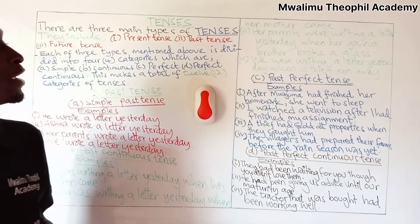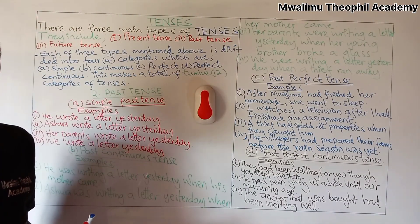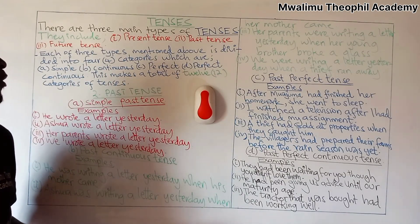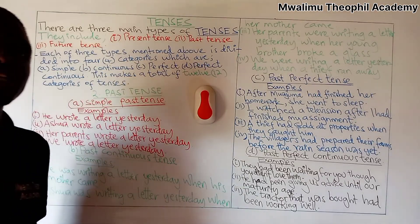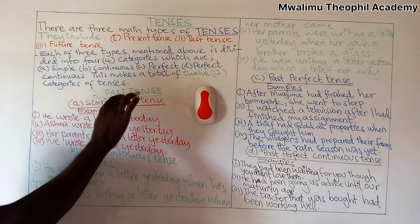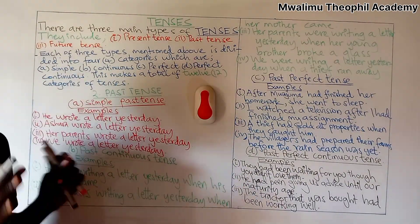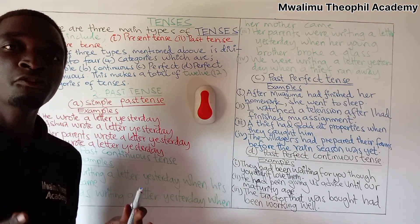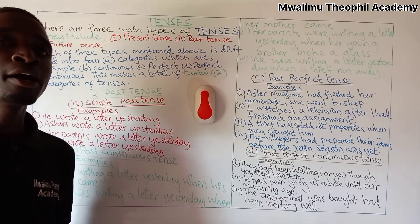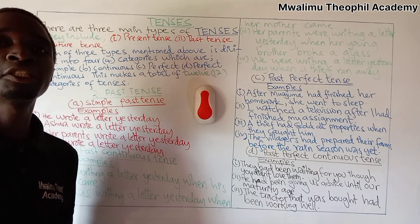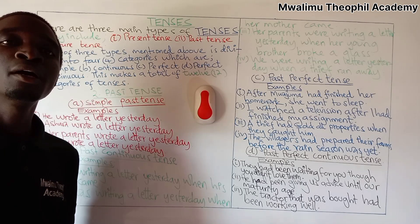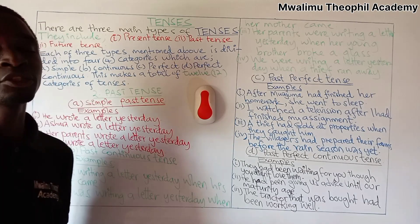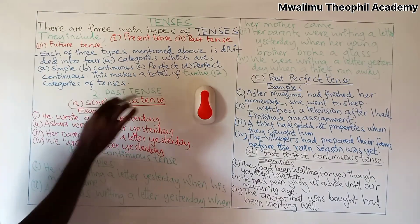Welcome again to Manitofil Akade. Today we are in the continuation of our section about tenses and I'm going to deal with a second type of tense, which is past tense. In past tense I'm going to give different examples on all four categories. As you remember, we said that we have four categories which are simple, continuous, perfect, and perfect continuous. So let's start with the simple past tense.